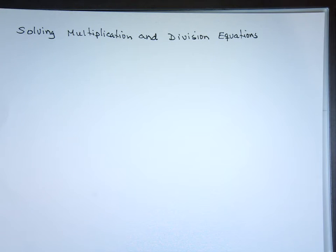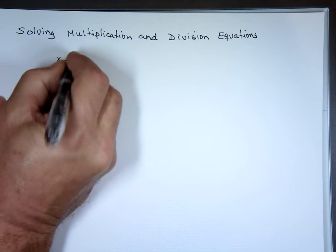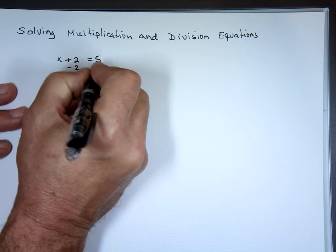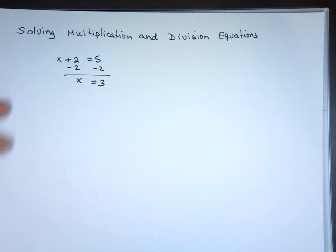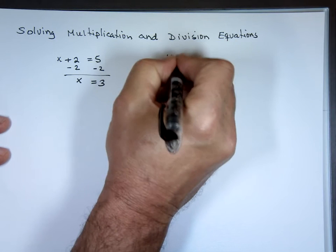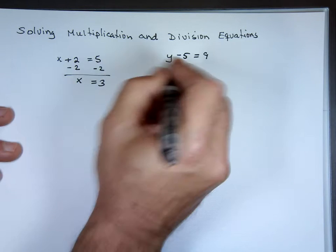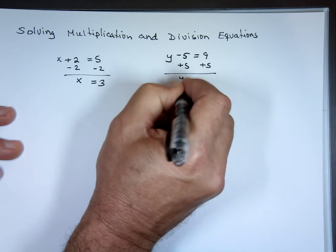If you remember from last class when we did addition and subtraction - quick review there. If you have addition, like x plus 2 equals 5, what's the opposite to addition? You subtract 2 from both sides, you end up with x equals 3. If you have subtraction, what's the opposite? Addition. So that's nothing to do with multiplication and division, just quick review there.